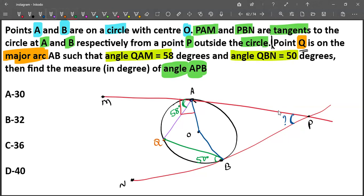Then the angle QAO would be 32 degrees. In the same way, this entire angle is 90 degrees, so the angle QBO would be 40 degrees.